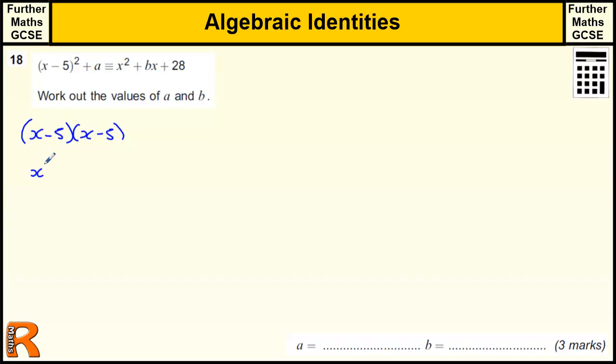Which, if we do properly, we get x squared minus 5 times x is minus 5x, x times minus 5, and minus 5 times minus 5 is plus 25.